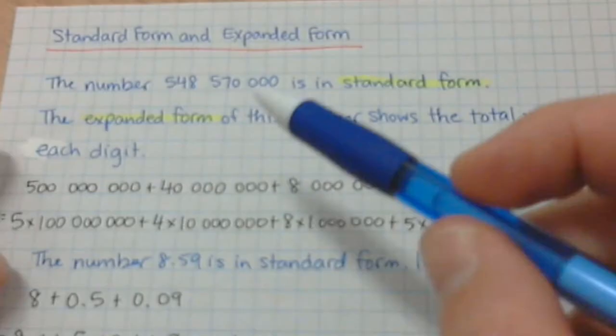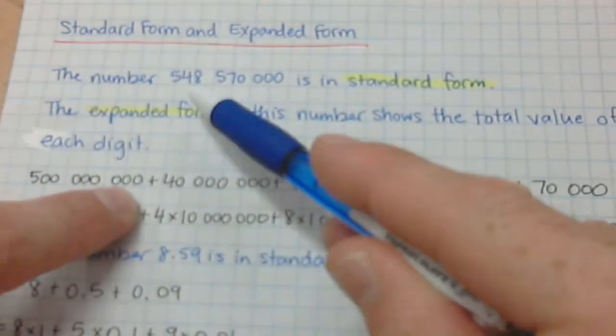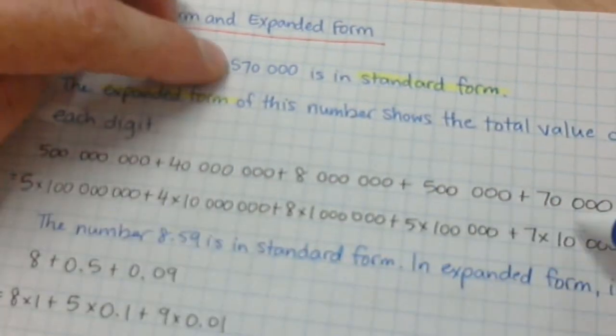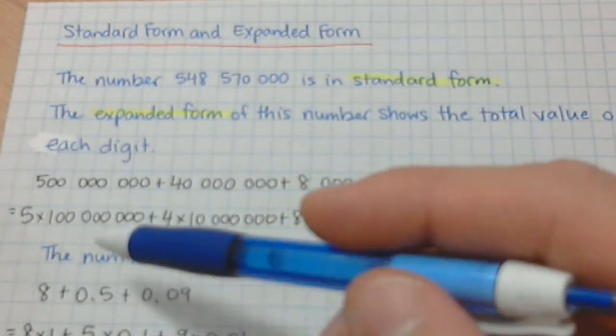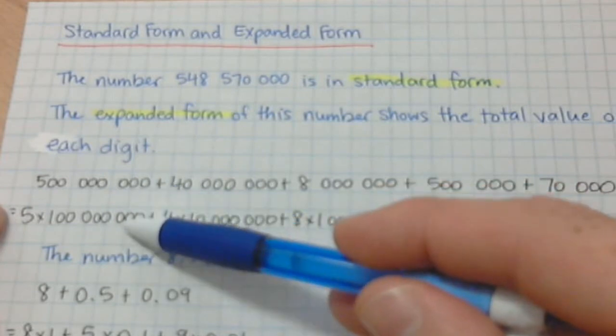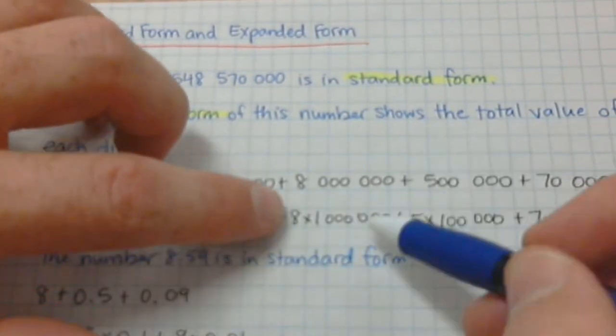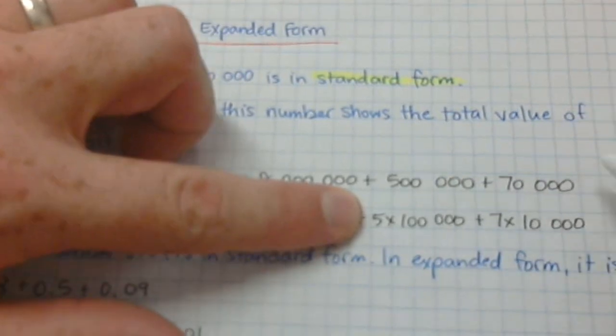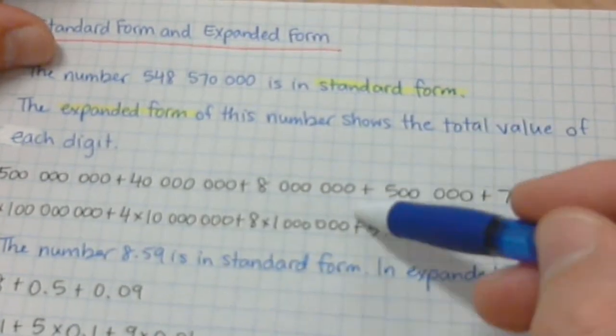The expanded form of the number shows the total value of each digit. So basically, you break the number down like this. It's 500 million is the value of this 5, so you write 500 million. The next number is 4, but it's in the 10 million spot, so it's worth 40 million. Then 8 million, 500 thousand, 70 thousand. So that's this number broken down. And then it goes even further. This is the 100 million spot, but it's 5, so it's 5 times 100 million. The 40 million gets broken down into 4 times 10 million. The 8 million gets broken down into 8 times a million. The 500,000 gets broken down into 5 times 100,000, and then it's 7 times 10,000. And you show your addition symbol between each of the numbers that it's broken down to.